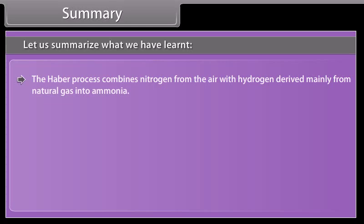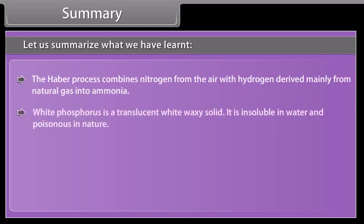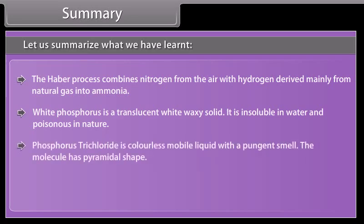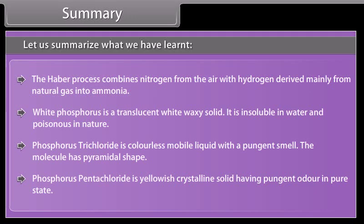The Haber's process combines nitrogen from air with hydrogen derived mainly from natural gas into ammonia. White phosphorus is a translucent white waxy solid, insoluble in water and poisonous. Phosphorus trichloride is a colorless mobile liquid with a pyramidal shape. Phosphorus pentachloride is a yellowish crystalline solid with pungent odor in its pure state.